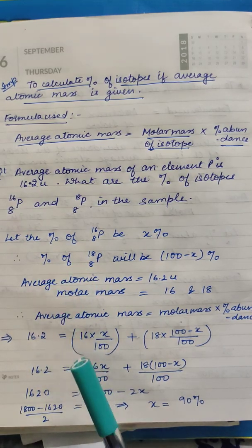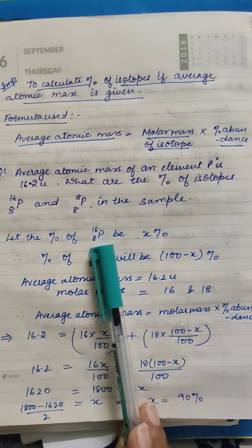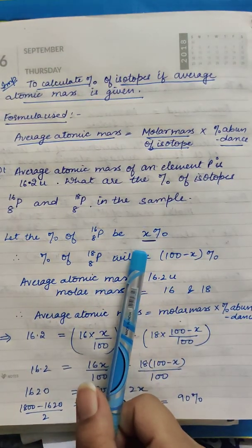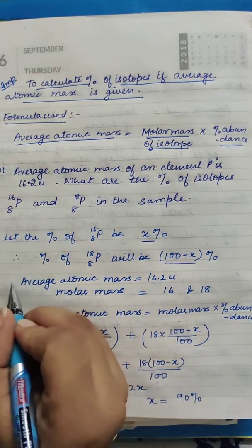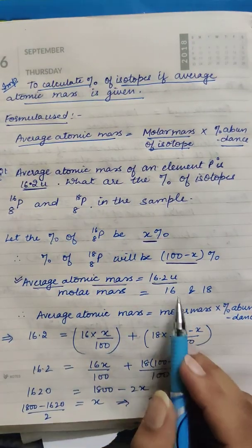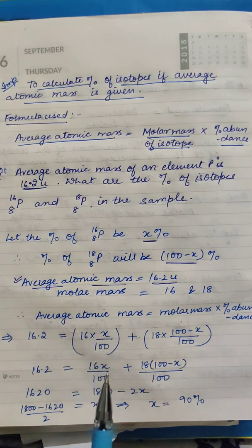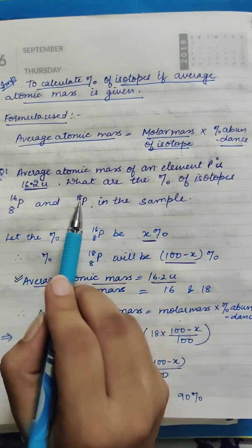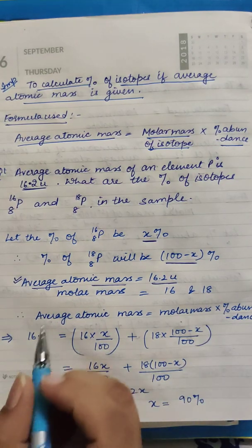To calculate the percentage, similar to what we do in mathematics, I will consider the percentage of the first isotope to be x percent. So the first isotope is x percent, and the second isotope will be 100 minus x percent. The average atomic mass is given as 16.2u. Since you know atomic number and mass number, the molar mass will be 16 for the first isotope and 18 for the second.